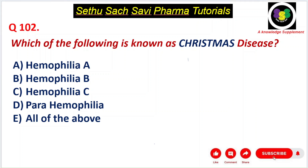Hello everyone, Merry Christmas! Welcome back to the question-answer discussion session. Today's question is: which of the following is known as Christmas disease? A) Hemophilia A, B) Hemophilia B, C) Hemophilia C, D) Parahemophilia, or E) All of the above.